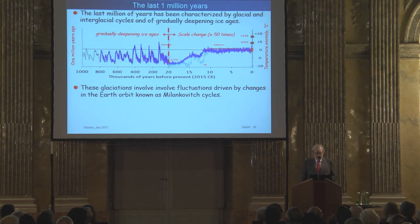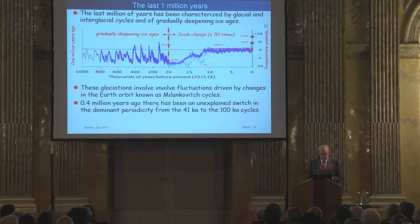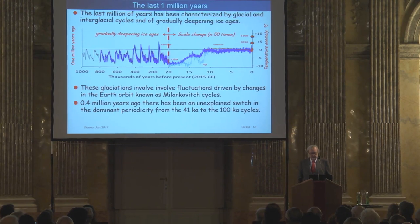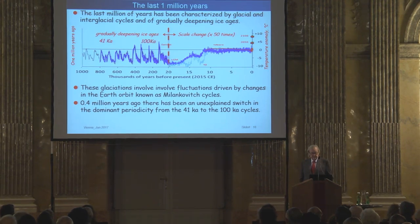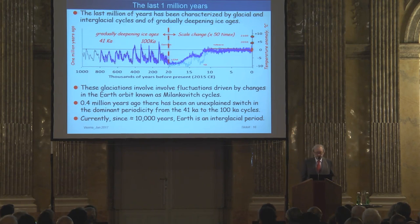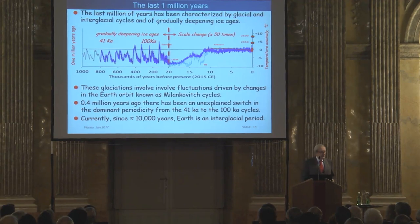This glaciation involves fluctuations driven by changes in Earth's orbit known as Milankovitch cycles. The phenomenon of this fluctuation is well understood: it is due to the movement of Earth's orbit. 400,000 years ago there had been a switch in the dominant periodicity — from 41 kilo-years to 100 kilo-years — as visible from the graph. Currently, since 10,000 years ago, Earth is in an interglacial period, a condition of remarkably stable temperatures we have never experienced for such a long time.